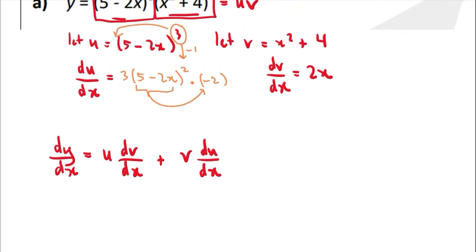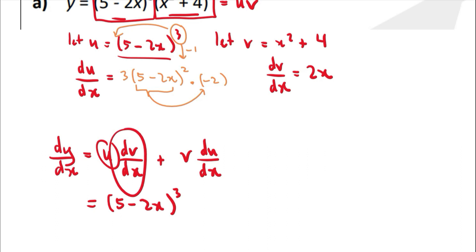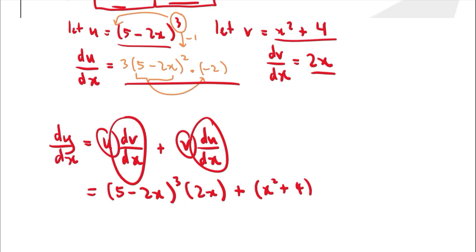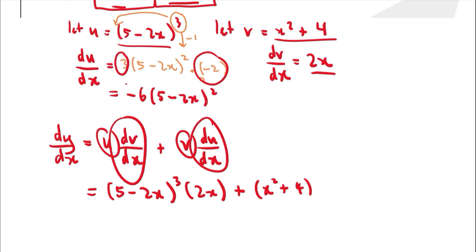Once we have all four components, we put them back into the formula. So dy/dx equals u — which is (5 minus 2x) cubed — multiplied by dv/dx, which is 2x, plus v — which is (x squared plus 4) — multiplied by du/dx. We can simplify du/dx first: multiply 3 and negative 2 to get negative 6, giving negative 6 times (5 minus 2x) squared.